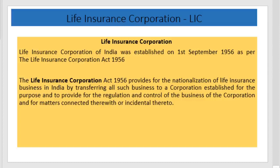The Life Insurance Act 1956 provided for the nationalization of life insurance business in India by transferring all such business to the corporation established for the purpose, and to provide for the regulation and control of the business. LIC brought together all life insurance companies under one umbrella to provide safety, security, and accuracy of the life insurance system in the country.